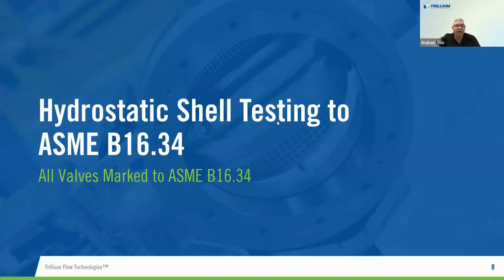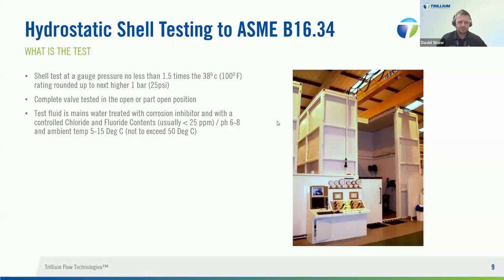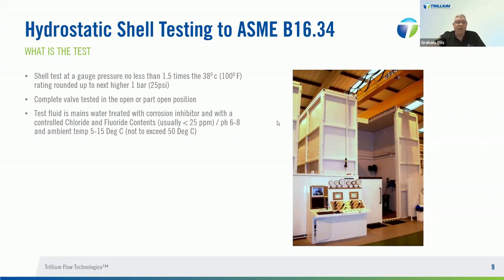This section on hydrostatic shell testing applies to all valves that we manufacture apart from valves manufactured to API 6A. The shell test is at a gauge pressure no less than one and a half times the 38-degree rated pressure, rounded up to the next higher one bar. The valve is tested in an open or partial open position. The test fluid is mains water with a corrosion inhibitor controlling chlorine and fluoride content — usually less than 25 parts per million, pH 6 to 8, at an ambient temperature of 5 to 15 degrees, not exceeding 50 degrees.